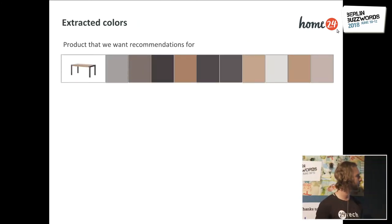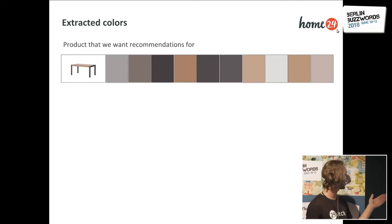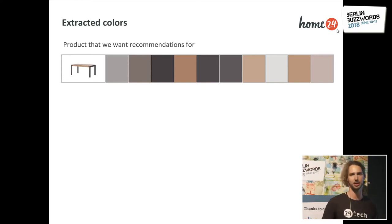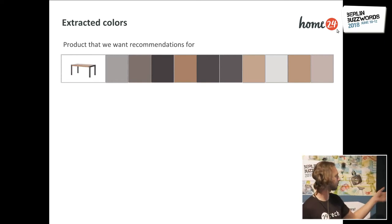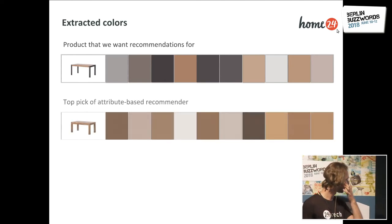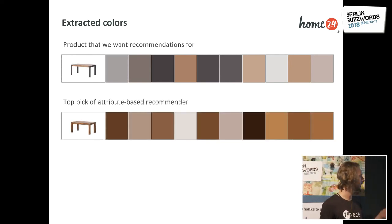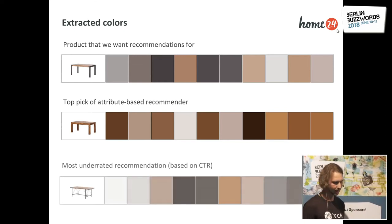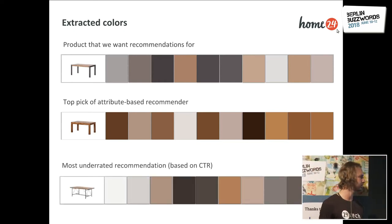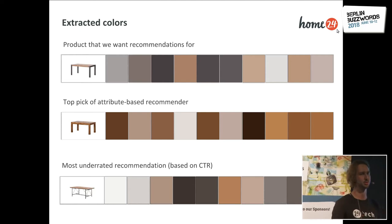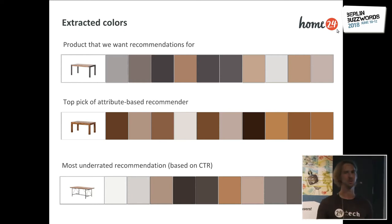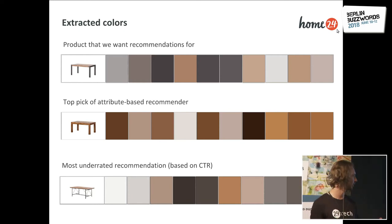Just to visualize what this actually looks like: this is the product we want recommendations for and its 10 representative colors. Then this is the top pick of the attribute-based recommender and its representative colors. And finally, the most underrated recommendation based on click-through rate — one that we should be pushing higher up in the slider but currently aren't. This already gives us an indication that we're on the right track and that mixing in this color signal will probably improve our recommendation system.